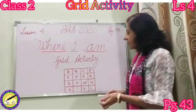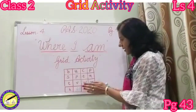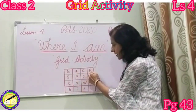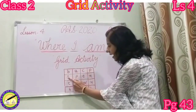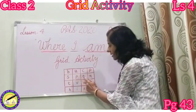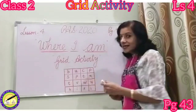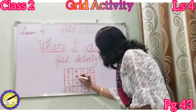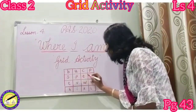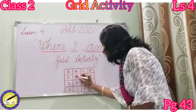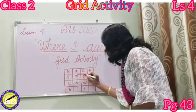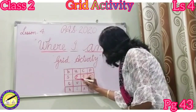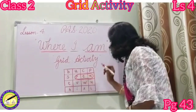We start by looking at the first line: B-U-C-P. No. Second line: S-T-E-N. Yes, this is the hidden word in the grid. We have to encircle them. P-E-N, pen. Let us encircle this word.